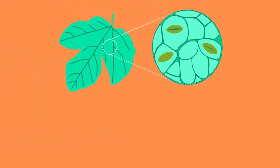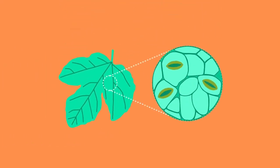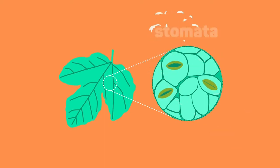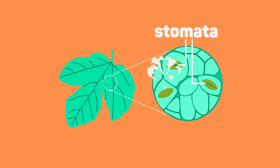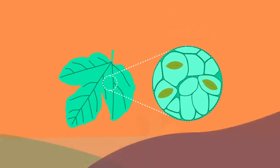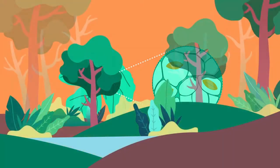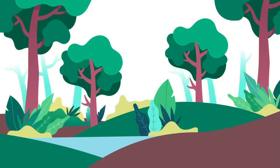The leaves are where the plant exchanges oxygen and carbon dioxide with the air and releases water vapor. Stomata are holes in the leaves that allow these gases to diffuse in and out. This is why you often see clouds forming over forests — water is released from the leaves in transpiration.